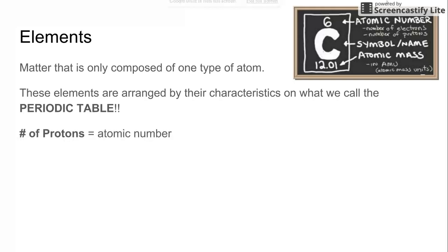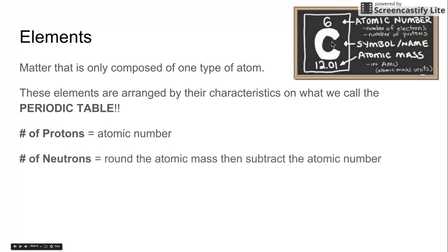So the atomic number up here, which we see for carbon is six, tells us the number of electrons and the number of protons for this atom, as long as it is balanced. The number of neutrons round the atomic mass, and then you subtract the atomic number. So in this case, you would take this 12, which would round to this 12.01, which would just become 12. And you subtract six, which means you have six neutrons.